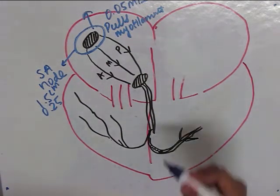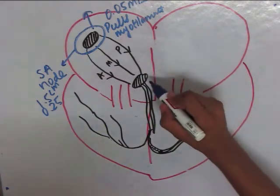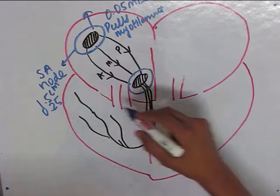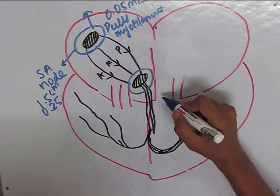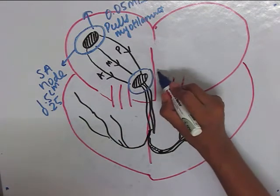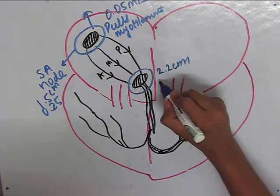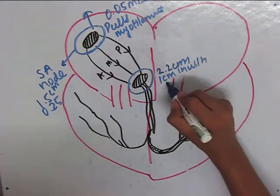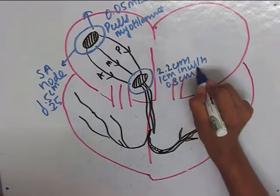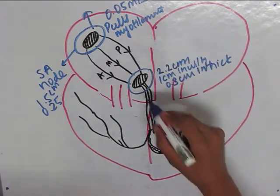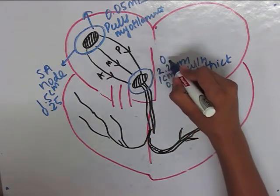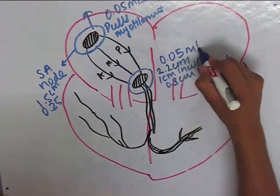Now there is one more bunch of nodal tissue called the AV node which is located near the atrium ventricular septum. The AV node is 2.2 centimeter in length, 1 centimeter in width, and 0.3 centimeter in thickness. The speed of conduction of the action potential in AV node is same as that of the SA node, that is 0.05 meter per second.